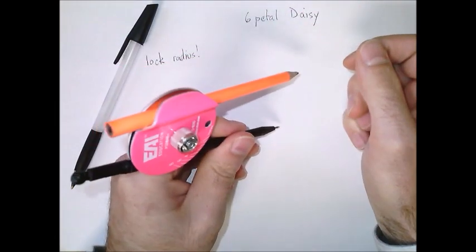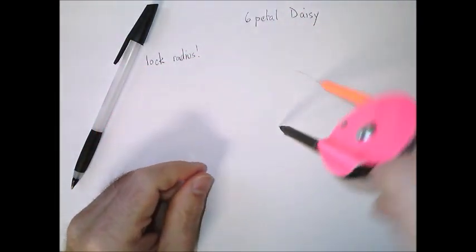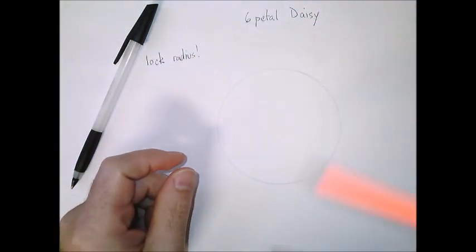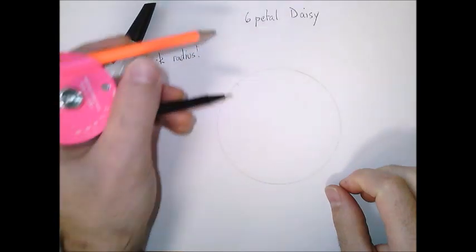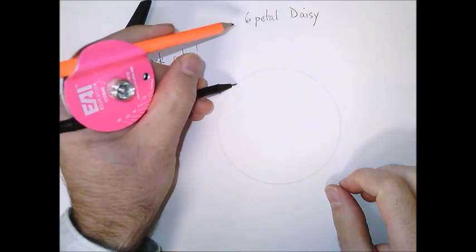So once we've got our radius locked we'll make our starting circle and then we'll pick any starting point. It can be part of a construction that's already going for you.